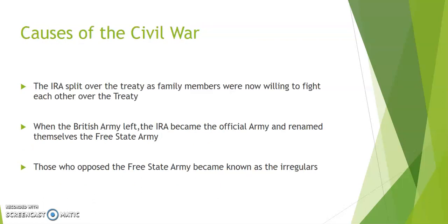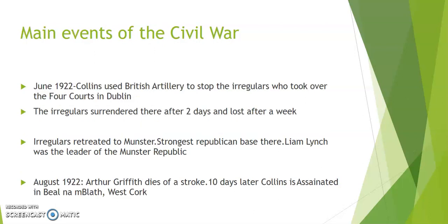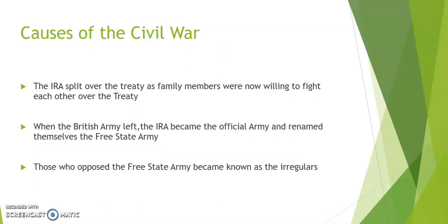The treaty caused much division in the country — it divided families and divided the IRA so much that the two sides were prepared to fight each other. When the British army began to pull out of the barracks, both pro- and anti-treaty IRA took them over. The pro-treaty IRA were called the Free State Army; the anti-treaty IRA called themselves Republicans but were also known as Irregulars. The Irregulars, led by Rory O'Connor, took over the Four Courts in Dublin. Collins left them alone as he wanted to avoid a civil war, but in the general election of June 1922 a majority voted in favour of the treaty. When the anti-treaty force in the Four Courts kidnapped General O'Connell of the Free State Army, it gave Collins the excuse he needed to attack the Irregulars.